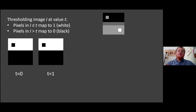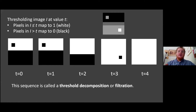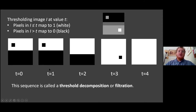Looking at all threshold values for an image, no single threshold picks up what look like two interesting regions. Persistent homology helps capture both by considering all thresholds at once. For image analysis this is called a threshold decomposition; for topologists it's called a filtration, because every white region in one threshold exists in the next threshold — each image is a subset of the next.